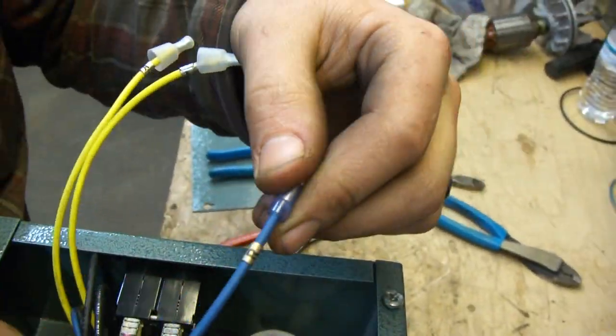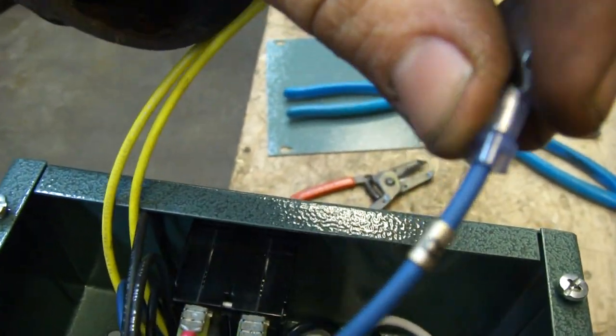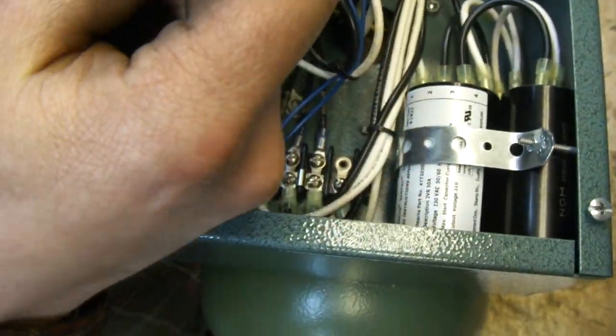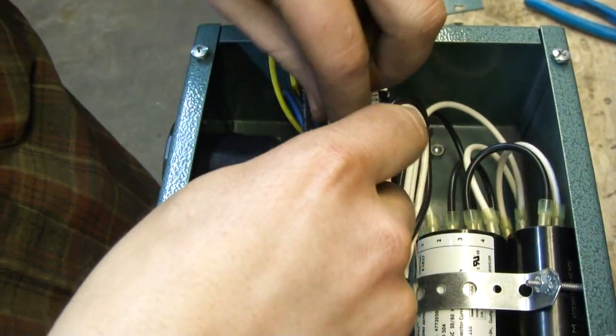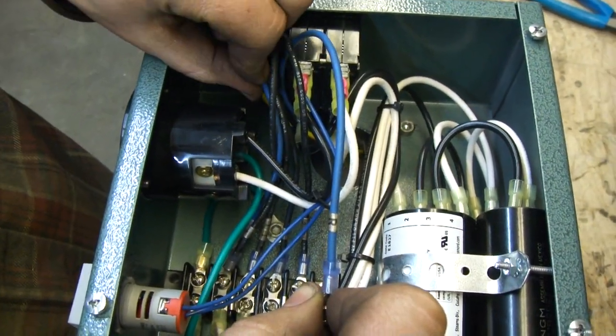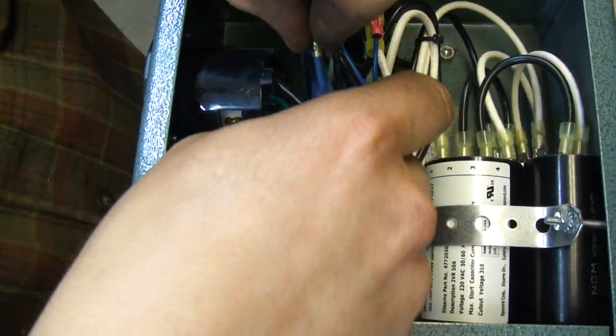And last is the final start wire. It can be labeled R, B. There's a lot of different labels on them. It will be the same color as your original start wire that got connected with number two.